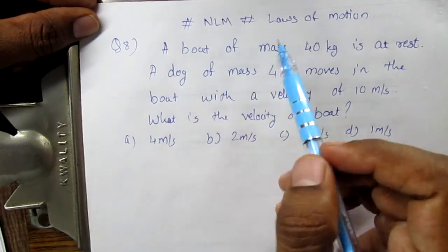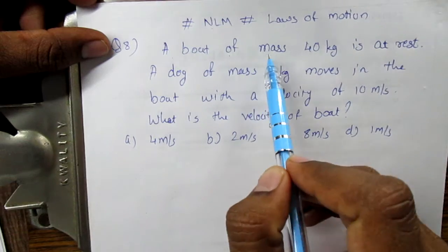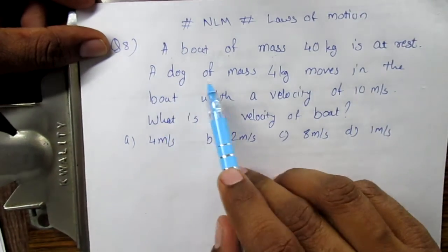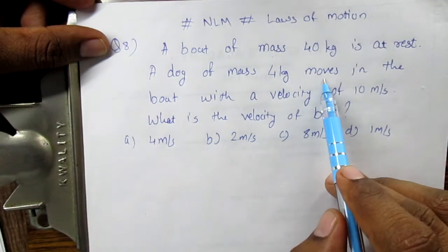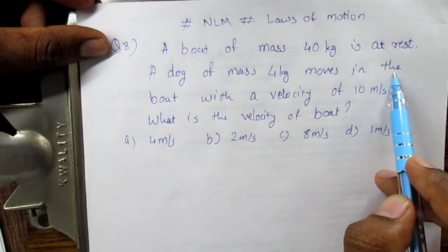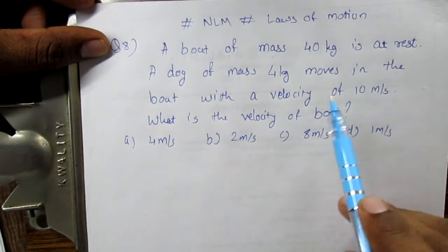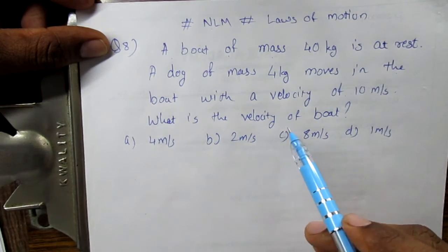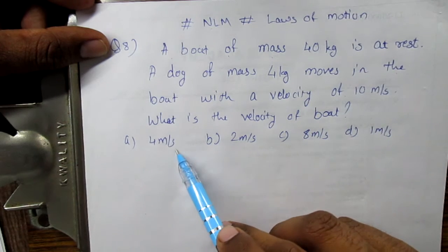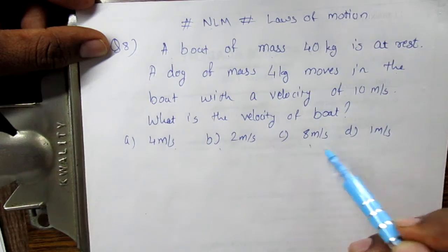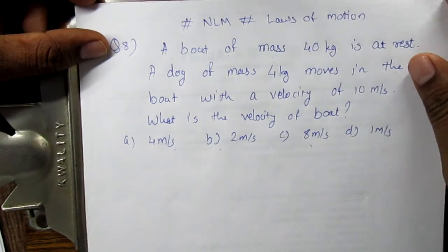Question number 8, laws of motion: A boat of mass 40 kg is at rest. A dog of mass 4 kg moves in the boat with a velocity of 10 meters per second. What is the velocity of the boat? There are four options given: 4 m/s, 2 m/s, 8 m/s, and 1 m/s. It's a basic question.